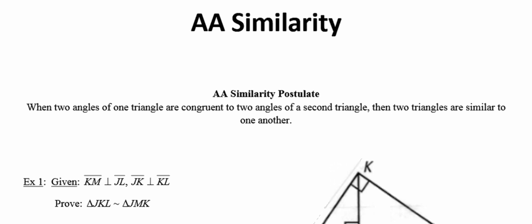One way in which we can prove two triangles similar is to use what's called the angle-angle similarity postulate. This says if you have two angles in one triangle congruent to two angles in a second triangle, then the two triangles are similar to each other.